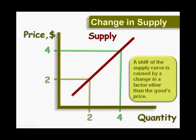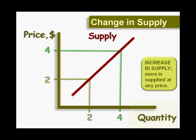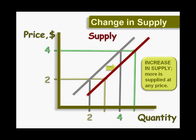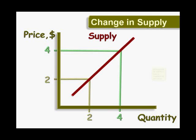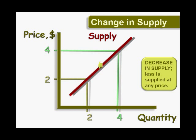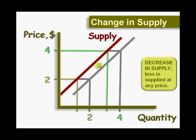An increase in supply means that sellers can supply more at any price than before. The cost of inputs may have fallen, or a change in technology has made suppliers more productive. Conversely, a decrease in supply means it has become more difficult to make this item. Thus, they will offer less at any given price.